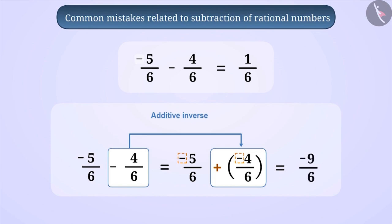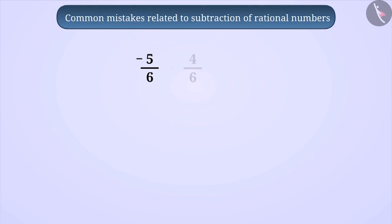While finding the result of minus 5 by 6 minus 4 by 6, some children also think that since both are negative numbers, the answer will be positive. So they get the result 9 by 6 when the correct result is minus 9 by 6.